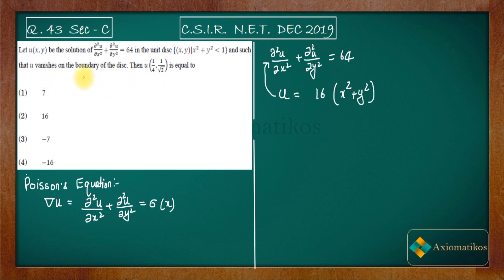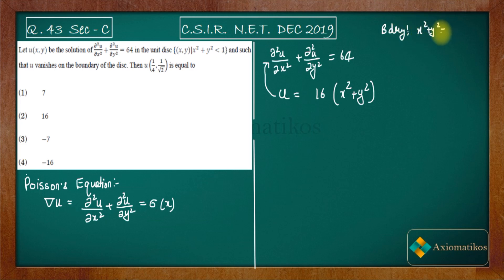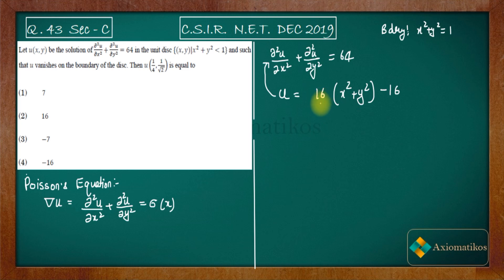Now let's verify the boundary condition. The boundary is x² + y² = 1. For u to vanish there, we subtract 16: u = 16(x² + y²) − 16. When x² + y² = 1, this gives 16 − 16 = 0. Adding a constant has no effect on the differential equation, so it is still satisfied.